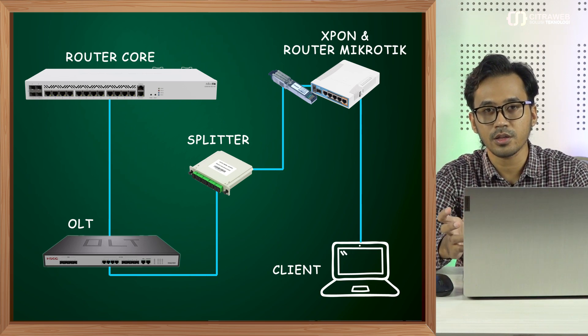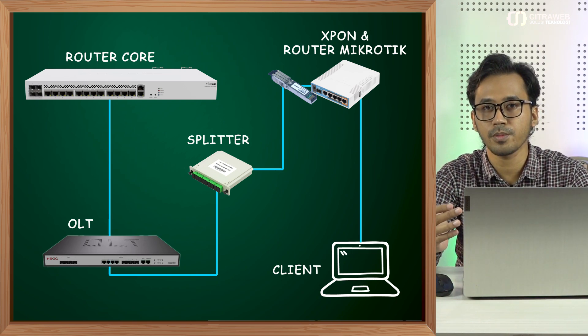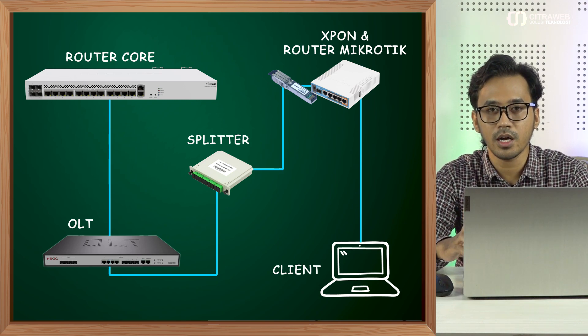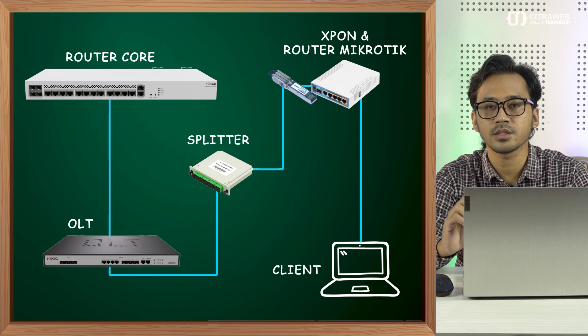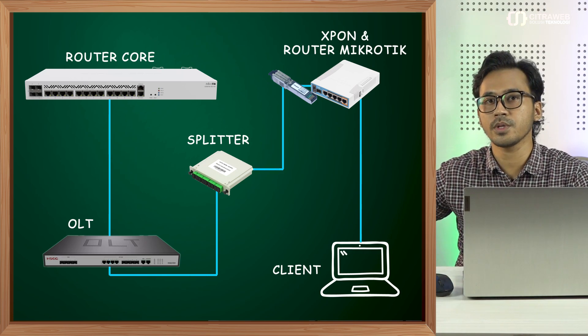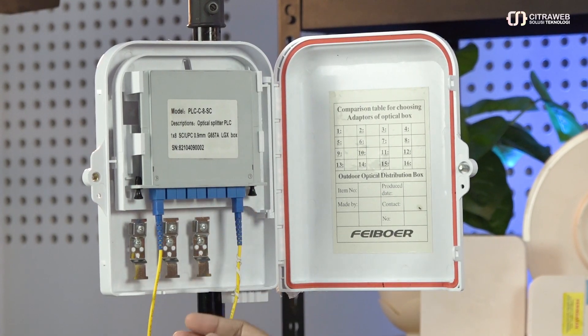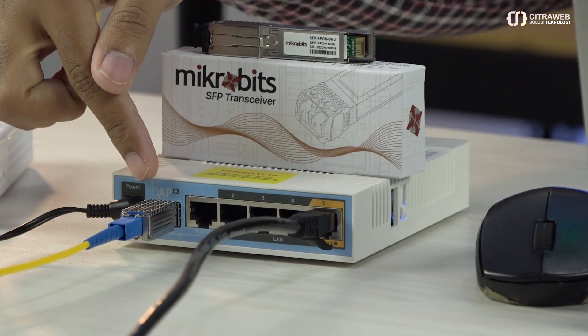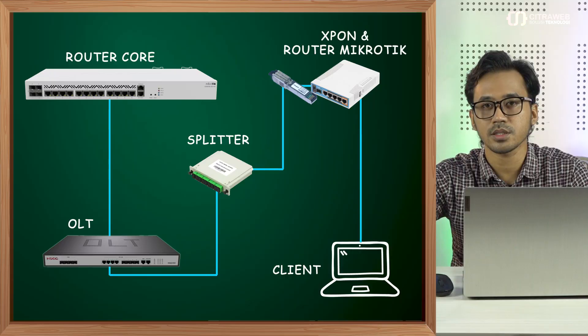Sebagai topologi, kami memiliki router di sisi provider, kemudian di bawah router provider kami memiliki perangkat OLT yang digunakan untuk memanajemen perangkat-perangkat ONU di bawahnya. Karena ini jaringan berbasis FTTH G-PON, kita juga memiliki perangkat splitter — kebetulan disini kita menggunakan splitter 1 banding 8, dengan input di satu port dan output di port 8. Dari port 8 pada splitter ini, kabel masuk ke perangkat SFP X-PON yang sudah dipasangkan di perangkat MikroTik hAP AC.